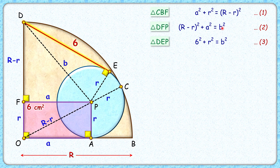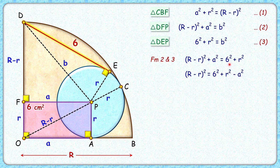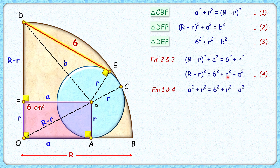Now let's solve these three equations. Starting with equations two and three, comparing the value of b² on both sides: the LHS will be (R − r)² + a² and the RHS will be 6² + r². From this equation, the value of (R − r)² equals 6² + r² − a². Let's call this observation number four. Now substituting this value of (R − r)² from equation four into equation one, we get: a² + r² = 6² + r² − a². Magically, r² cancels out and we get 2a² = 6².